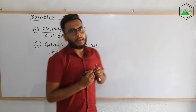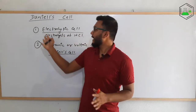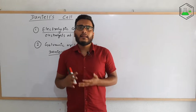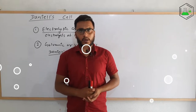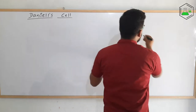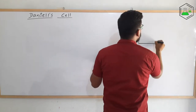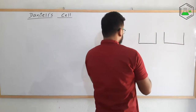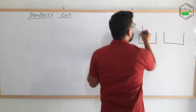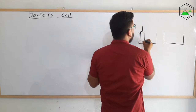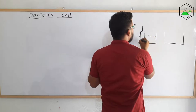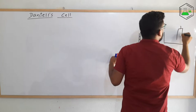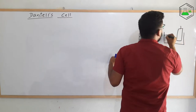Daniel's cell is an example of a galvanic or voltaic cell. A Daniel's cell consists of two beakers. Let me draw the diagram. This is the first beaker and this is the second beaker. In both beakers, one metal rod is dipped in the respective metal salt solution.